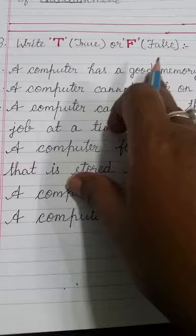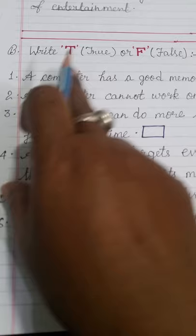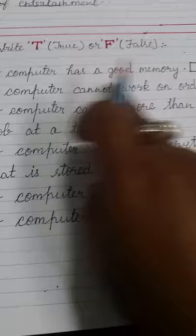Now move to question number B, true or false. Write T for true and F for false. Jo true hai, jo sahiya uske liye true ya T likhenghe. Jo false hai, yani ki galat hai uske liye F ya false likhenghe.